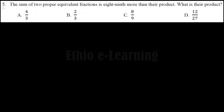The sum of two proper equivalent fractions is eight-nines more than their product. What is the product? We are given two proper equivalent fractions whose sum exceeds their product by eight-nines. We need to find: the proper equivalent fractions, the product, the sum, the difference, and more.